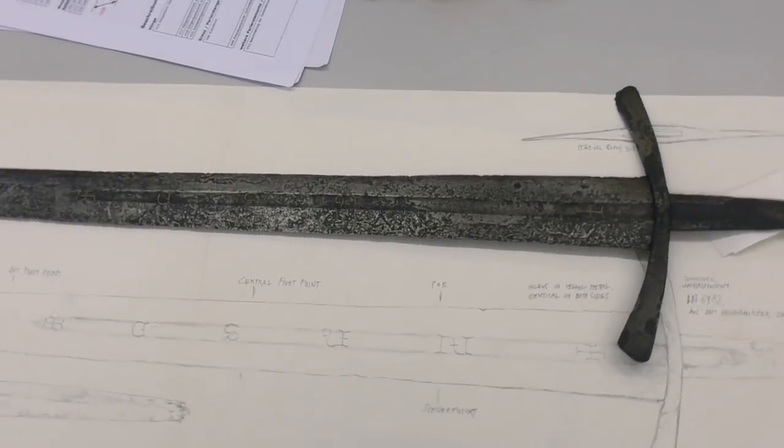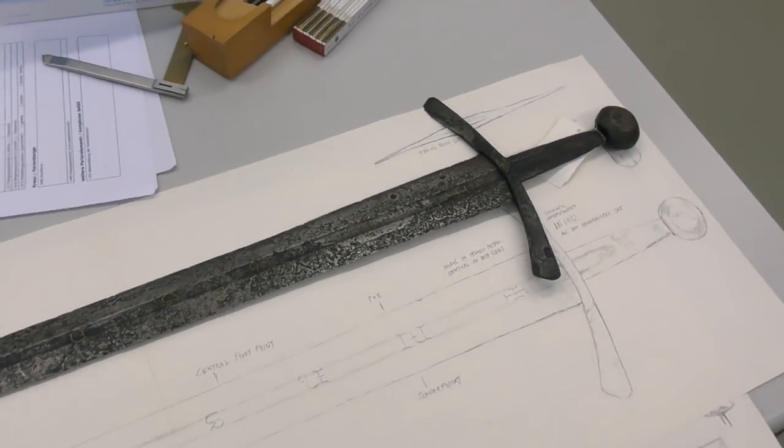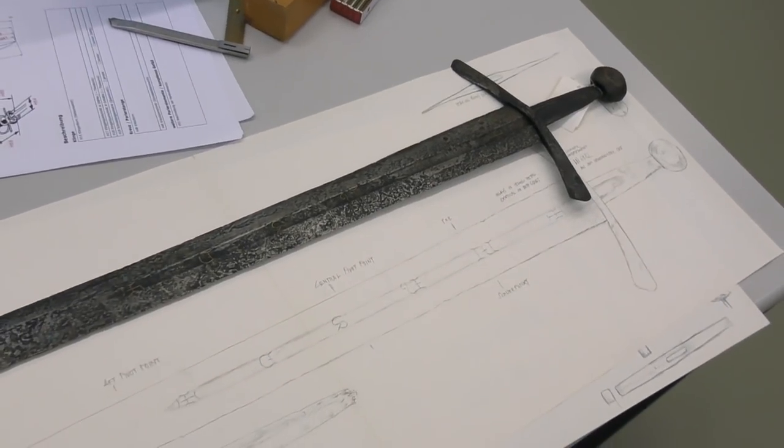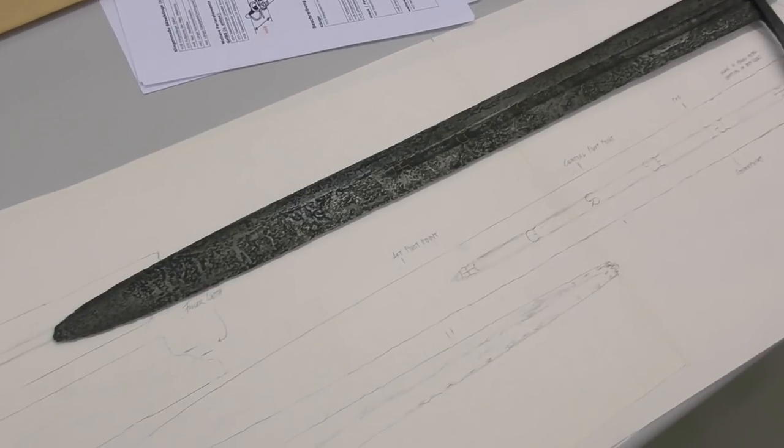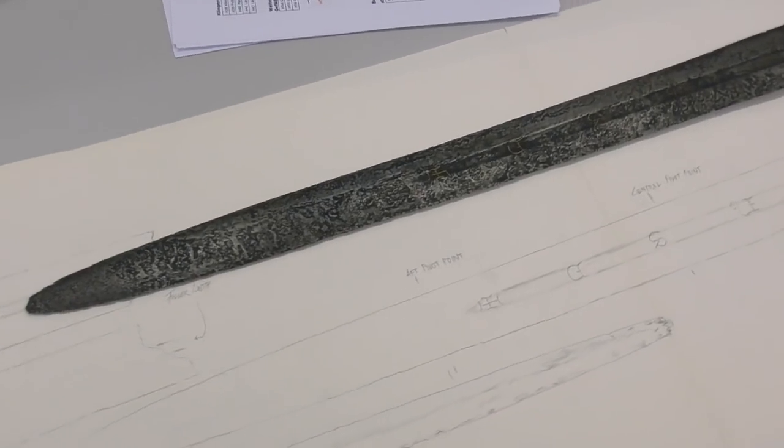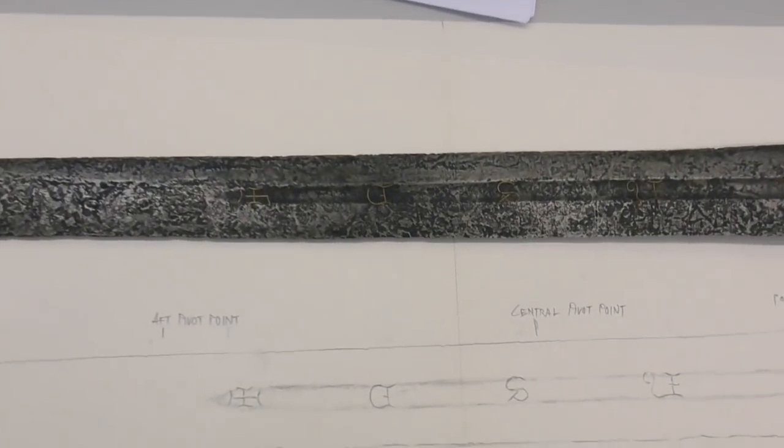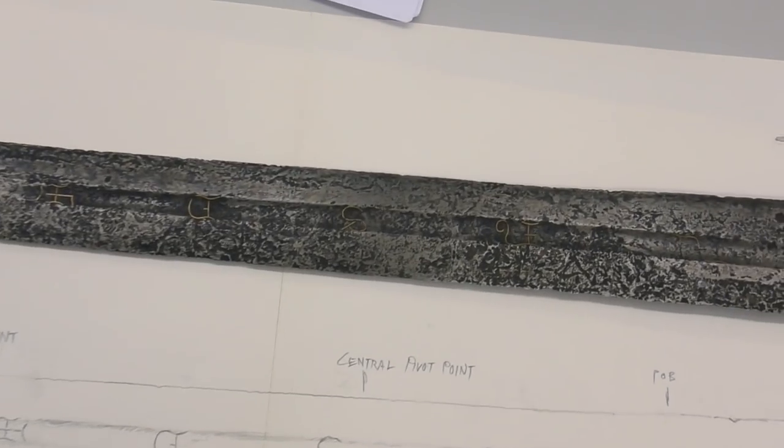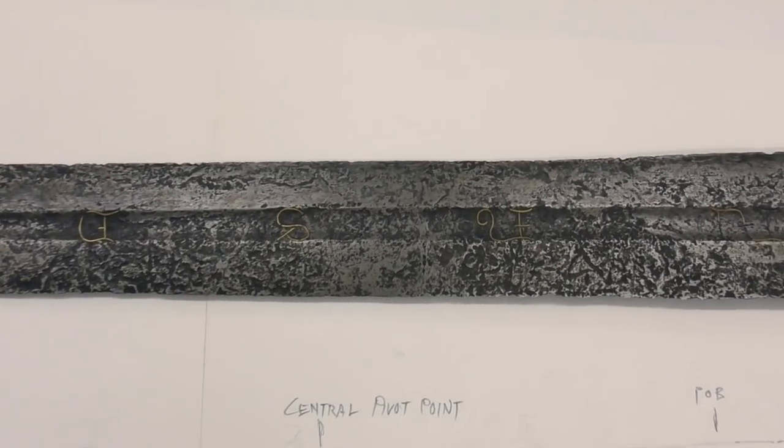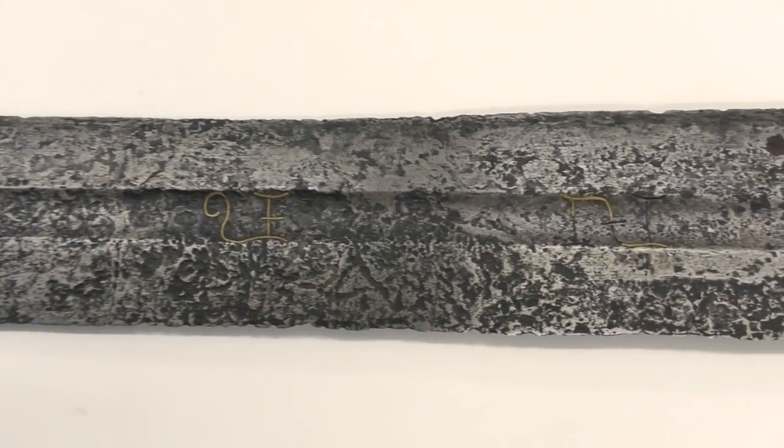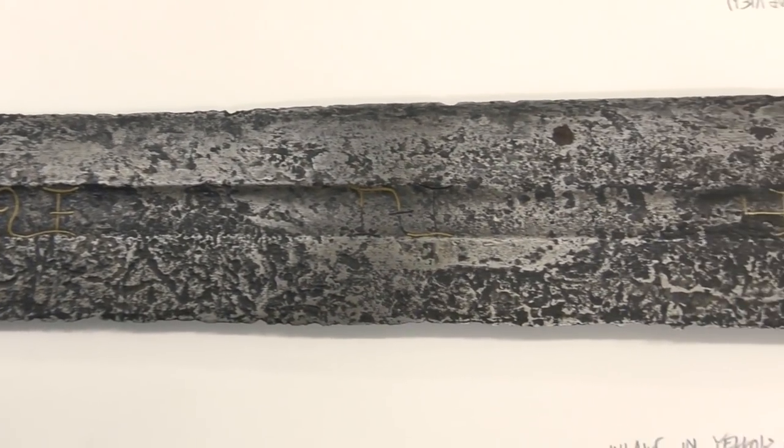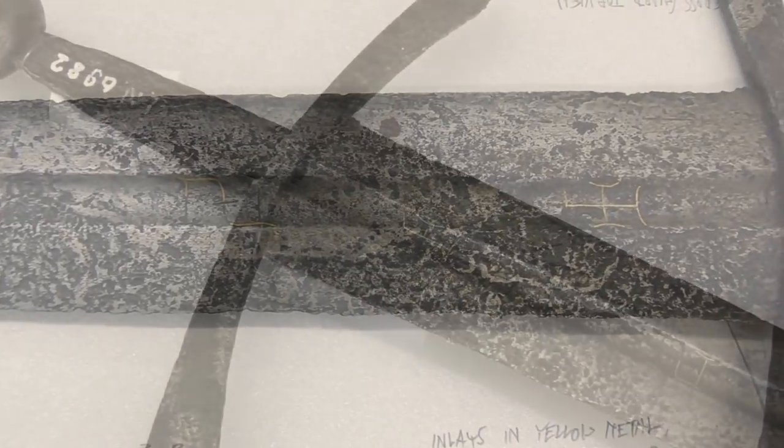This is one of a few surviving Type 14 swords from the collection of the Swiss National Museum. It has an inlaid blade with a number of letters inlaid in yellow metal. The inscription reads the same on either side.